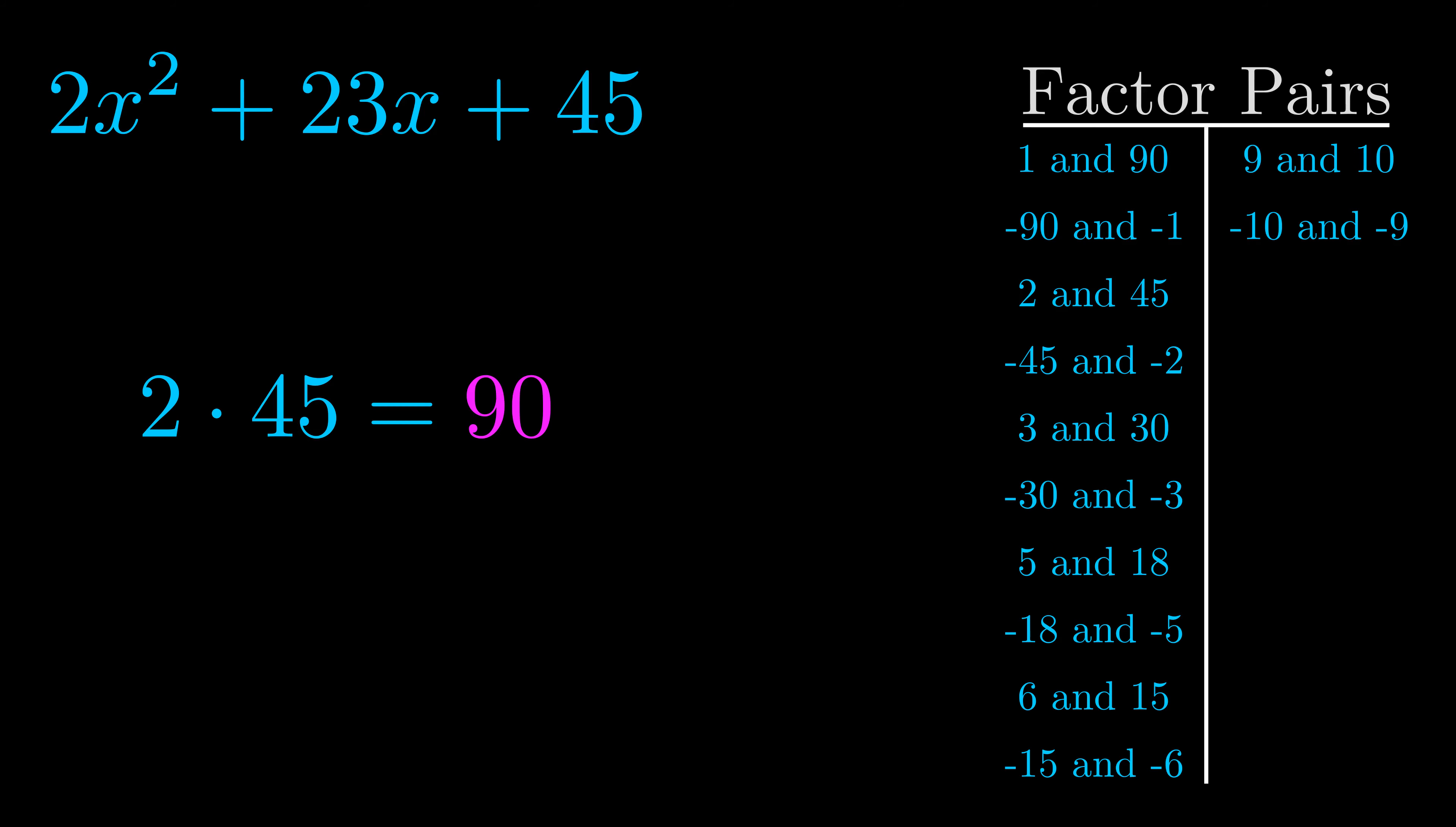Once you have these factor pairs, the goal is to find which of these pairs adds to the b value.